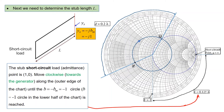Now that we've determined the stub location, we need to find the stub length L. We're using a short circuit stub, and we want the normalized admittance looking into the stub, YS, to equal minus J times Bm. That's the same as requiring the normalized susceptance looking into the stub to equal minus Bm. Since Bm equals plus 1, we require the normalized susceptance looking into the stub to equal minus 1.